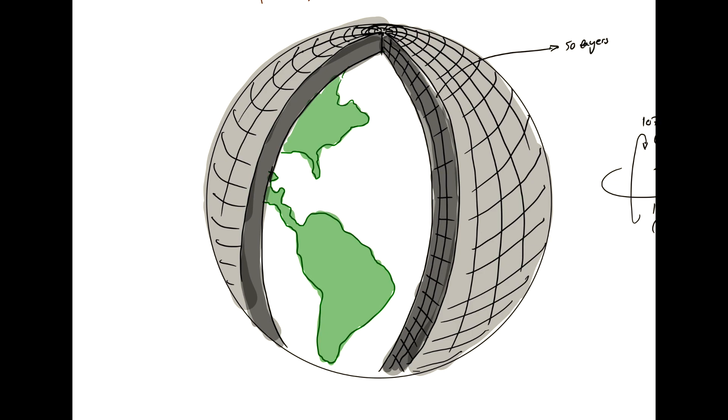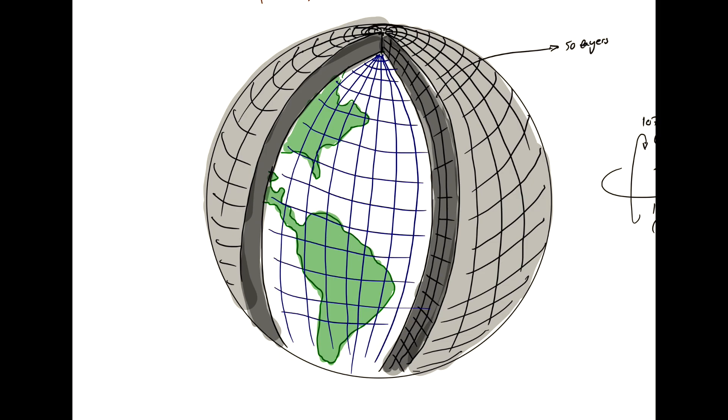And then we, of course, also have ocean and land grids. So, we've established the setup of a model. Now, what do we actually do in every one of these grid boxes? Well, we'll solve the primitive equations of fluid motion.